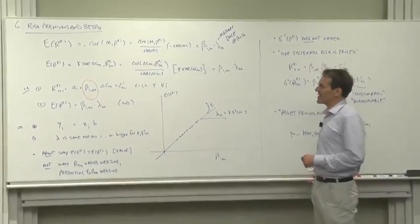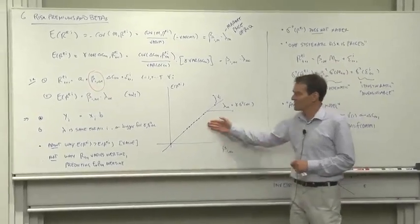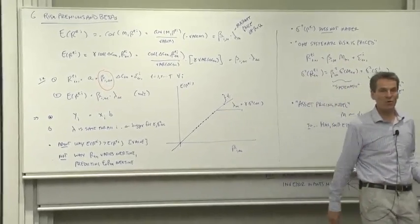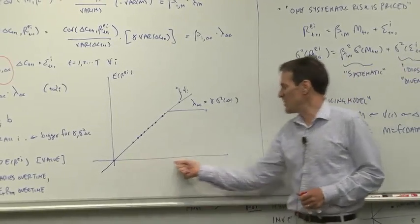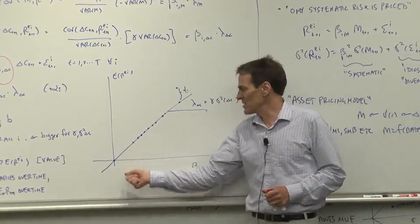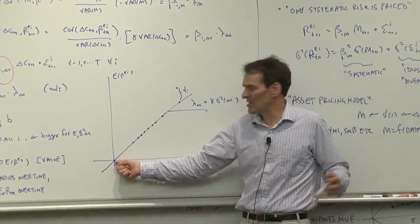So graphically, the standard picture of asset pricing looks like this. This is what the world should look like. If you took all securities and lined them up by their betas, some securities, like interest rates, they're constant. They don't have any beta.